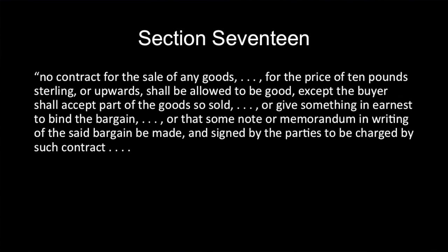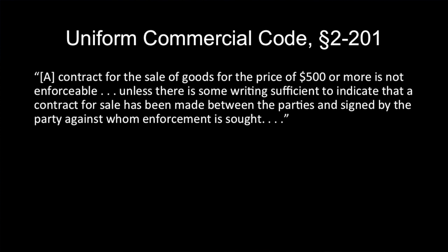Section 17 of this 1677 Statute of Frauds governed the sale of goods. It provided no contract for the price of 10 pounds sterling or upwards shall be allowed to be good except the buyer shall accept part of the goods sold or give something in earnest to bind the bargain, or that some note or memorandum in writing of said bargain be made and signed by the parties to be charged by such contract. That section has a very similar counterpart in the UCC in Section 2-201. Subsection 1 provides that a contract for the sale of goods for a price of $500 or more is not enforceable unless there is some writing sufficient to indicate that a contract for sale has been made between the parties and signed by the party against whom enforcement is sought.